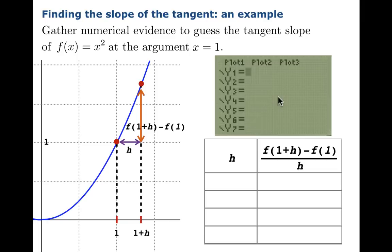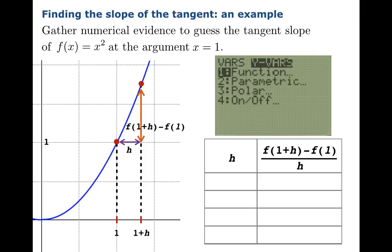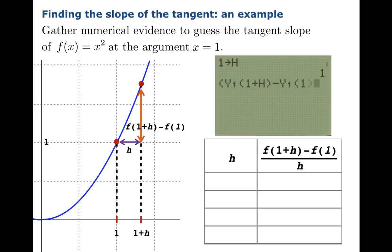Now, to get our data, we're going to use the graphing calculator as an aid. We'll plot x² and use the zoom decimal window to make sure we've got the right function. Now we're going to calculate this quotient. First, we'll store 1 into h. Then we're going to calculate our secant slope formula using the y1 register. It's tedious the first time, but we anticipate doing it several times. So we're going to take the trouble to do it once, then use second enter to repeat it conveniently.